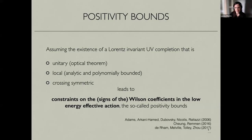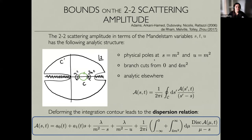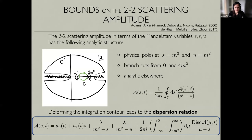They've been a popular topic, maybe revived around ten years ago. Positivity bounds are imposed as bounds on the two-to-two scattering amplitude. In terms of the Mandelstam variables s, t, and u, the two-to-two scattering amplitudes have the following analytic structure, here assuming t equals zero. There are physical poles at s equals m² and s equals 4m², and there are branch cuts from zero to 4m², where m is the mass of the scattering particle. The amplitude is analytic everywhere else.